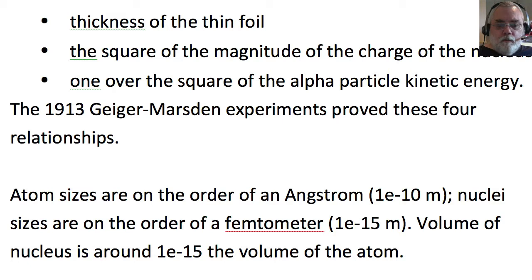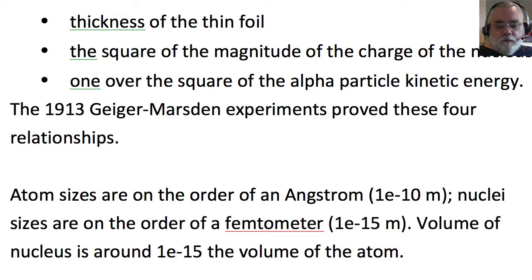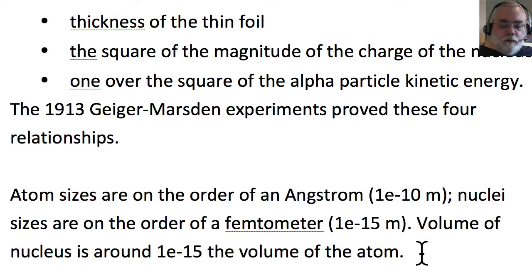Atom sizes are on the order of an angstrom — 10⁻¹⁰ meters. Rutherford's model was for a nucleus that was essentially a point particle, so much smaller than the atom. We now know that nuclei sizes are on the order of 10⁻¹⁵ meters — 100,000 times smaller than the radius of an atom — so the volume of the nucleus is 10⁻¹⁵ times the volume of an atom.